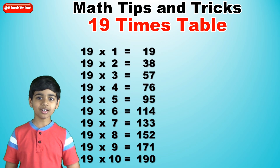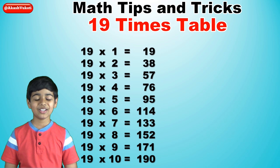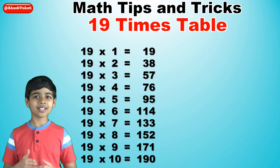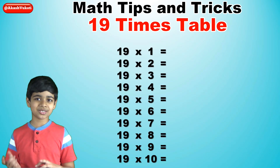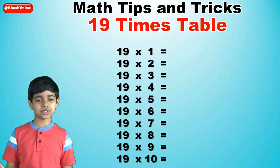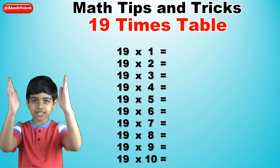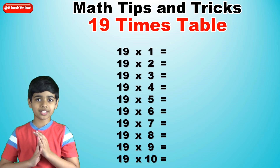Now we can start. Let's start by writing 19 times 1, 19 times 2 and so on and so forth, written here in a column like this.